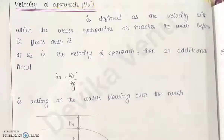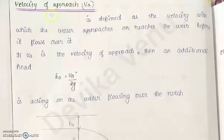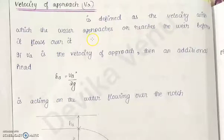We will see a new term known as velocity of approach, VA. This velocity of approach has to be considered when finding out the discharge. It is defined as the velocity with which the water approaches or reaches the weir before it flows over it — which means it already has a velocity of approach just before passing over the weir.